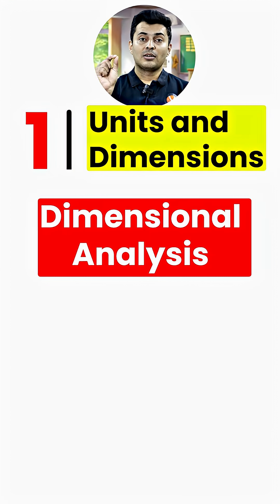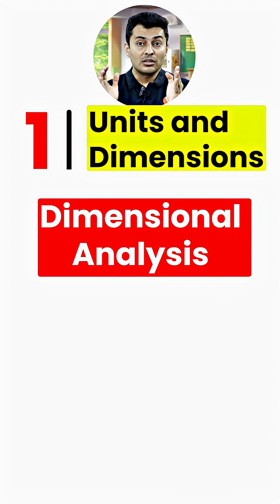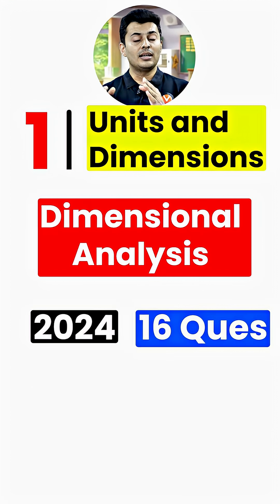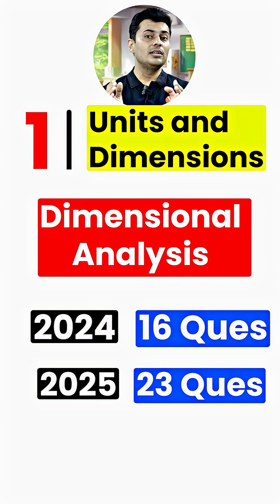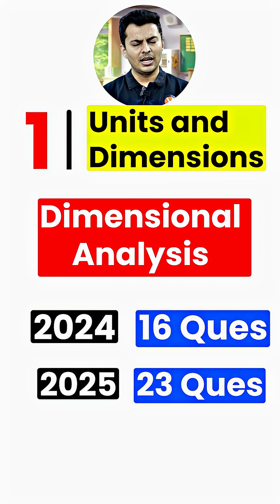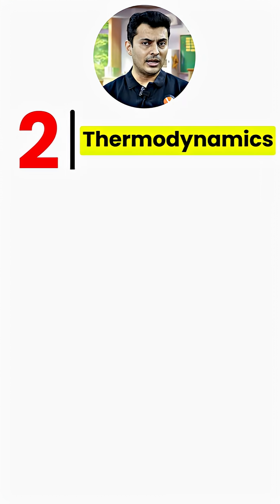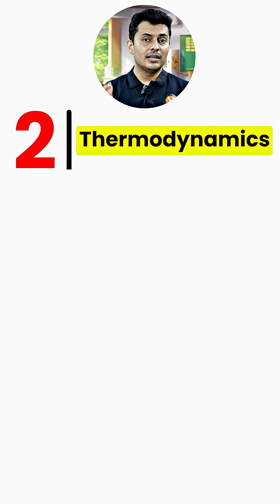Starting with number one: Units and Dimensions. The dimensional analysis part came around 16 times in 2024 and 23 times in 2025. It's clearly a sure-shot favorite topic. Number two is Thermodynamics.